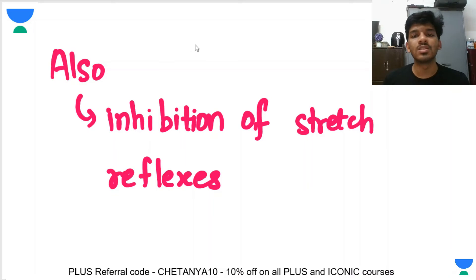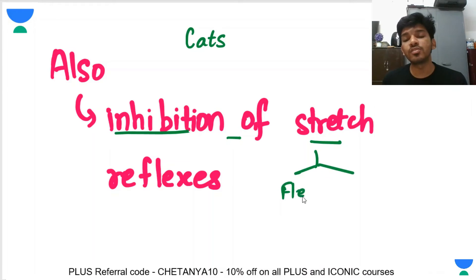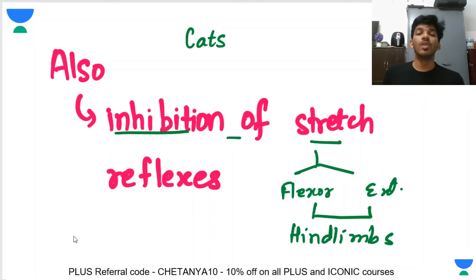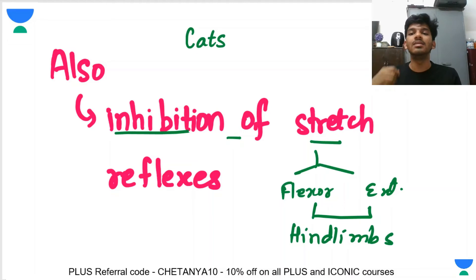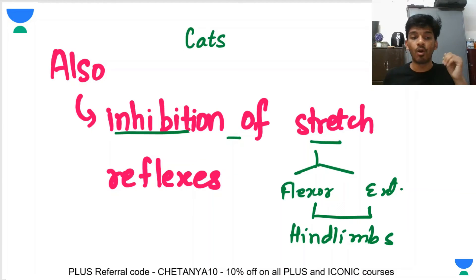Another thing seen experimentally, mainly in cats, is inhibition of the stretch reflexes — specifically in the flexor and extensor muscles of the hind limbs. No need to remember that in great detail, but just remember there will be inhibition of the stretch reflex in the hind limbs. These are all the experimental observations, and as physiologists we try to explain why this happens and what role it plays in the body.